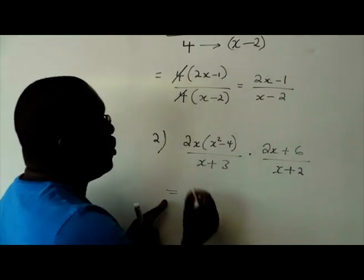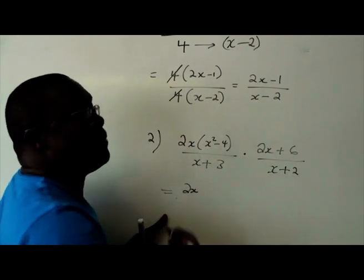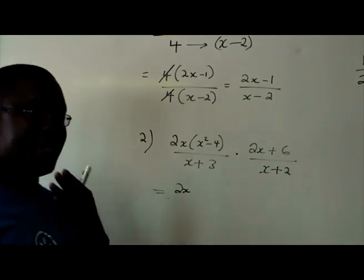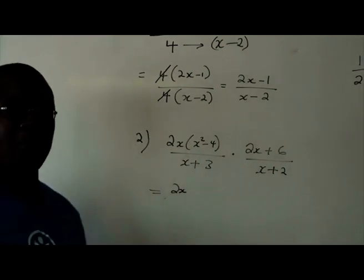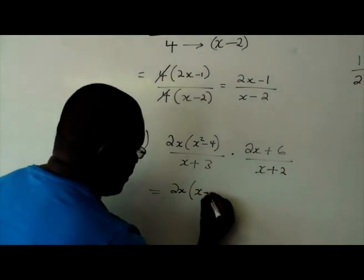Now, let's see. So 2x. Right. But we know that x squared minus 4 is the same as saying x plus 2 multiplied by x minus 2 because of difference of 2 squares. So we're going to write it that way.